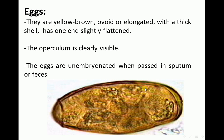The ova are yellow-brown, ovoid, and elongated, with a thick shell. The ova has two membranes, and one end is slightly flattened. In the anterior portion of the ovum, we can see an operculum. The eggs at the time of oviposition are unembryonated when passed in sputum or stool.